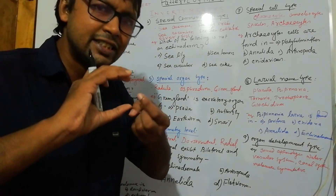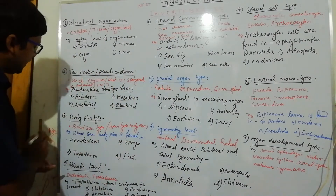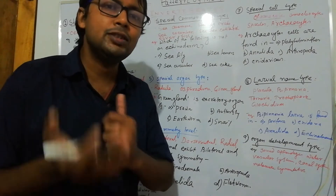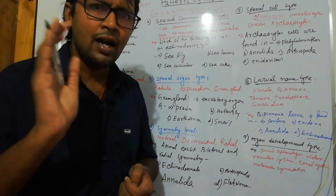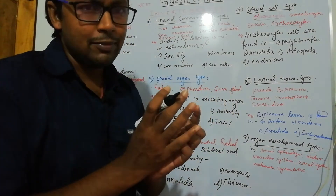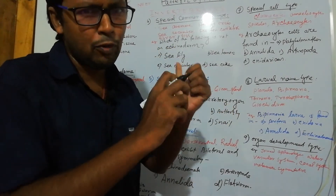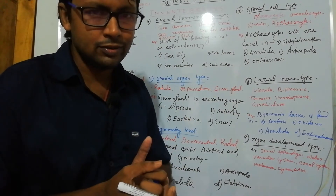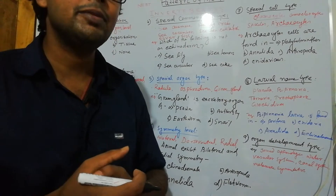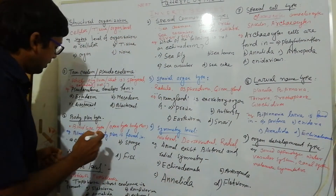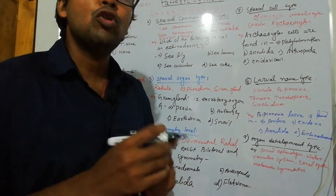Body plan type: closed body type means only mouth is present with no anus, or open type means both mouth and anus are present. Up to nematohelminthes you will encounter either only mouth or only anus. In porifera it is not a closed type because it has so many pores. In cnidaria, ctenophora, and platyhelminthes it is a closed type. In nematohelminthes (roundworm) it is open type.